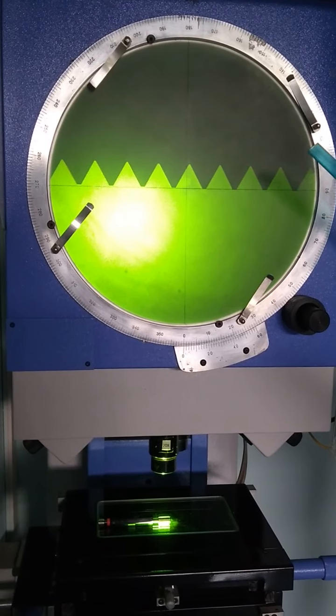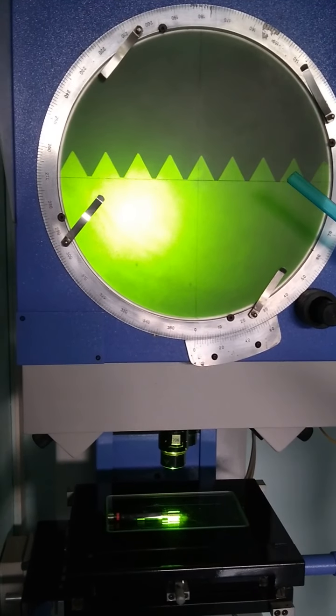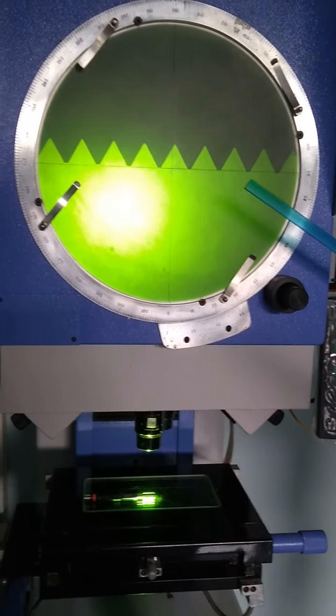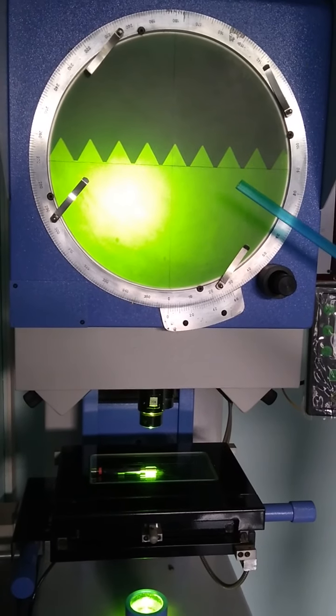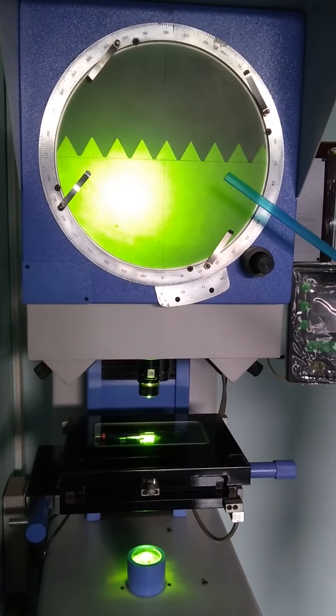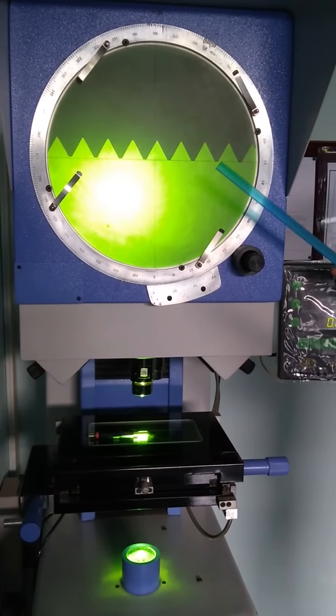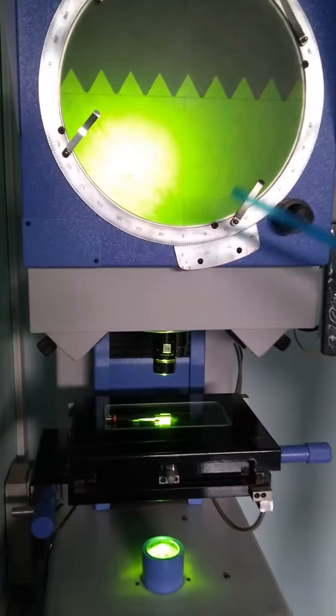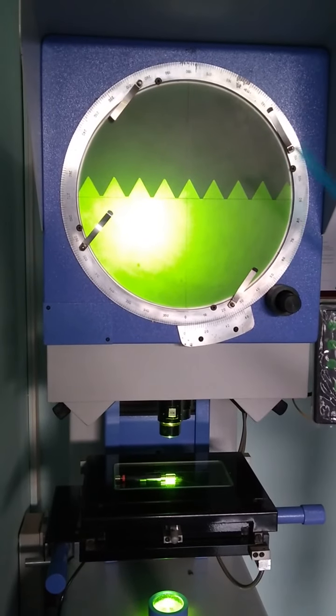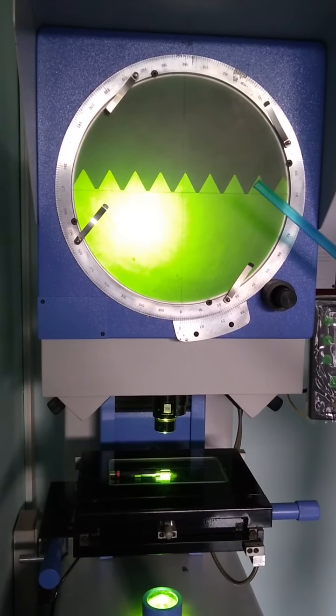The typical method for lighting is achieved by diascopic illumination which is lighting from behind. This type of lighting is also called transmitted illumination when the specimen is translucent and light can pass through it. If the specimen is opaque like in our case then the light will not go through it but will form a profile of the specimen which we are able to see on the screen.